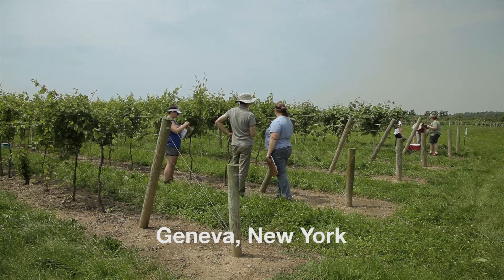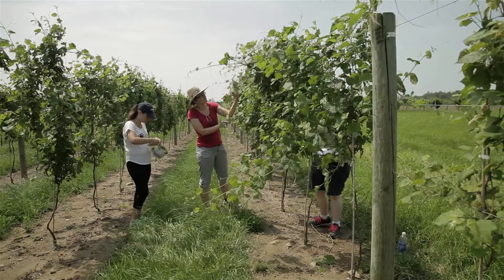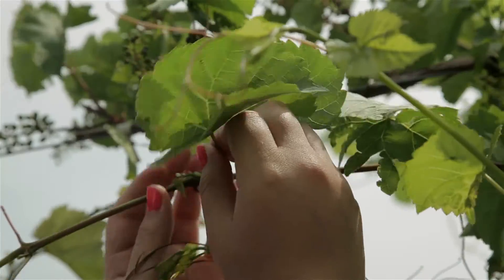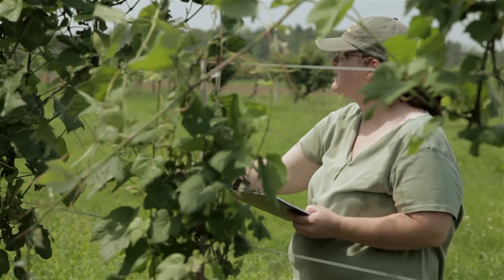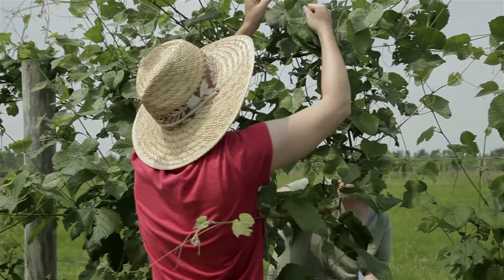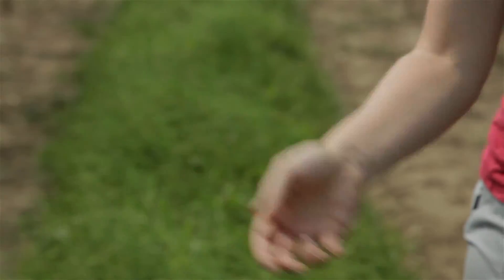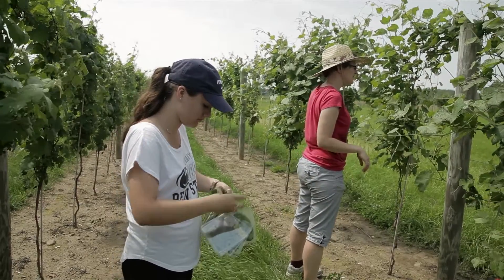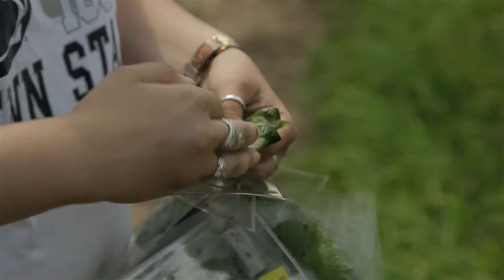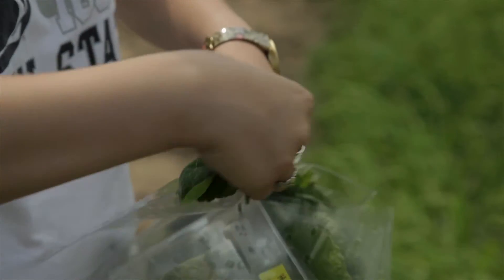We're standing here at a vineyard location that houses three of the core VitisGen populations. Today we're out collecting leaves for our trait evaluation looking at powdery mildew disease resistance. We try to harvest the fifth leaf. They are each labeled, so this way we can track individuals from the vineyard into the laboratory.